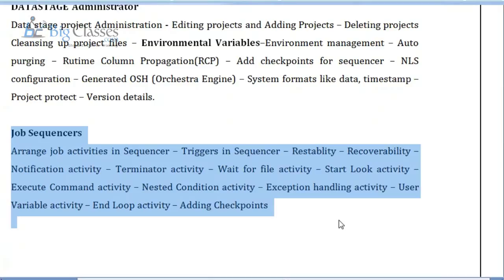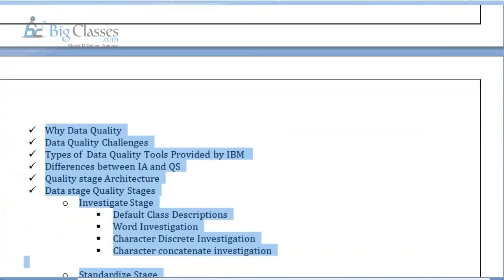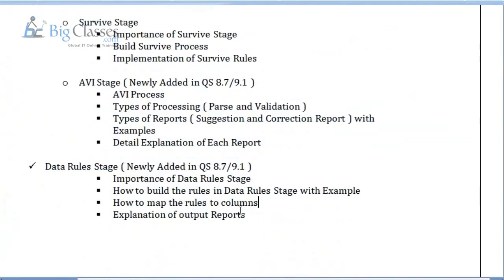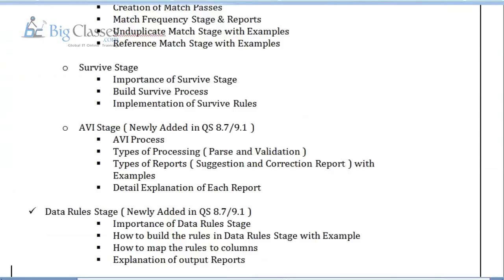Once the sequencer part is done, we'll go for Quality Stage. Along with normal Data Stage development activities, we also have separate data quality capabilities. There are Quality Stage stages available to check the quality of our data. The main challenges in Quality Stage include: inconsistent standards in structure, format, or values; missing data and default values; spelling errors; data in wrong fields; buried information; data myopia (no common key format); and data anomalies such as duplicates.